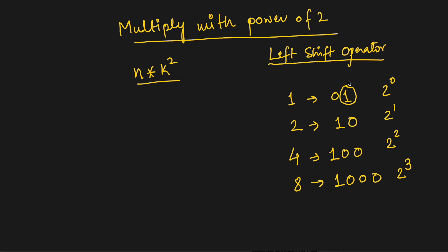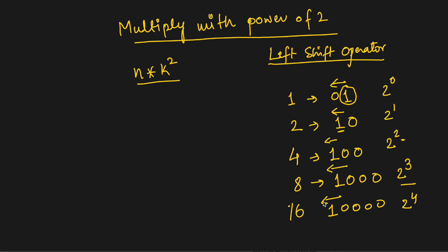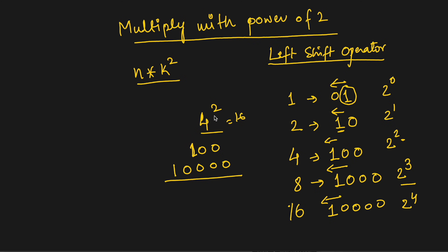We can see that we are shifting the bit to the left. For 2^1 the bit is here; for 2^2 the bit is shifted left by one place; for 2^3 again shifted left by one place. So 16, which is 2^4, is 10000 — shifted by one more place. For 4^2, which is 16: 4 is 100 and 16 is 10000, so that bit is shifted left by two places.